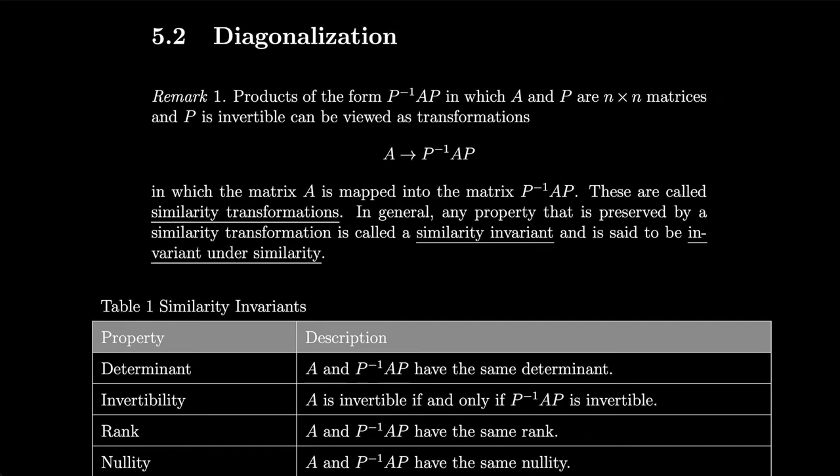Section 5.2: Diagonalization. Products of the form P inverse AP, in which A and P are n by n matrices and P is invertible, can be viewed as transformations from A to P inverse AP, in which the matrix A is mapped into the matrix P inverse AP. These are called similarity transformations. In general, any property that is preserved by a similarity transformation is called a similarity invariant and is said to be invariant under similarity.